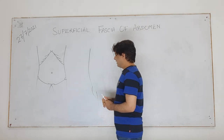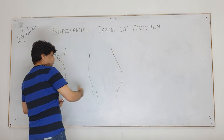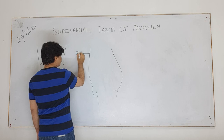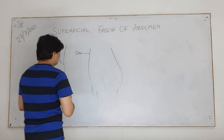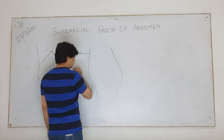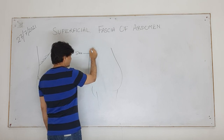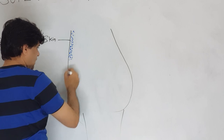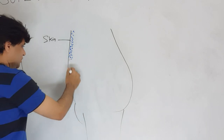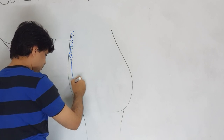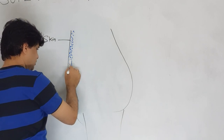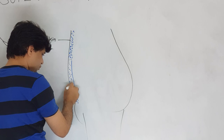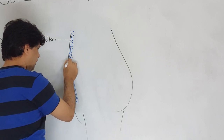Through the mid-clavicular line I can show you the different layers. From the wall, of course, is the skin - the most superficial thing. Below the skin, let's say at the level of the umbilicus, you have the superficial fascia. Below the level of the umbilicus, the superficial fascia is split into two layers: a superficial thick fatty layer and a deeper membranous layer.